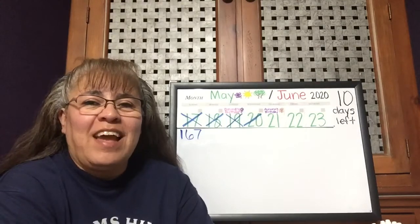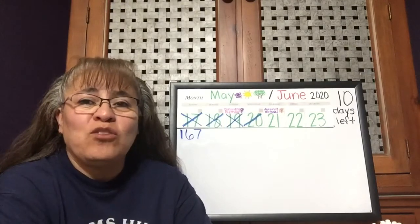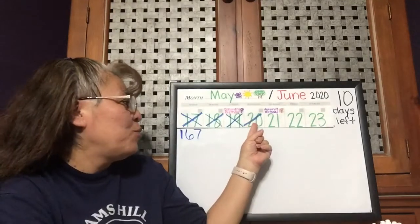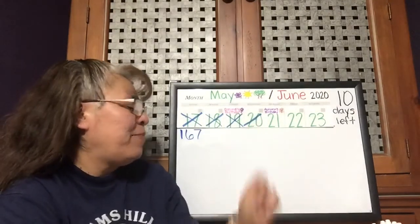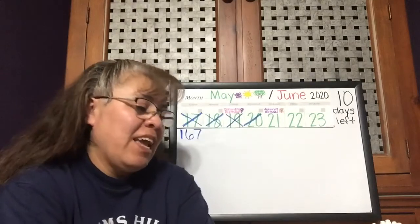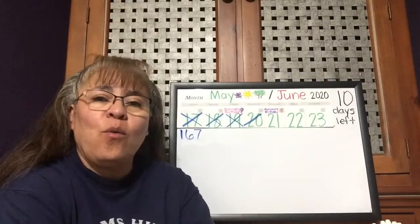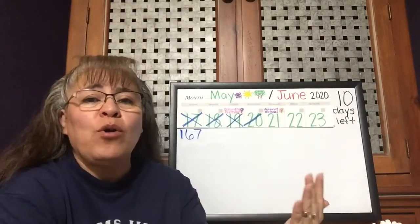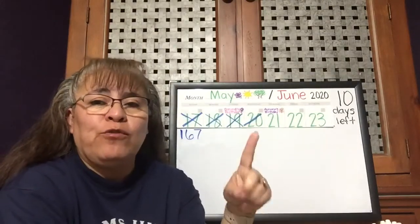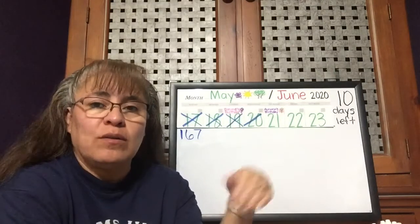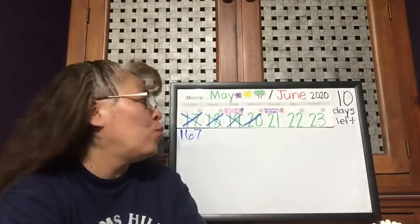Yesterday was May 20th, the 20th day of May. And every day when we move forward, we move forward one number — it goes up by one.